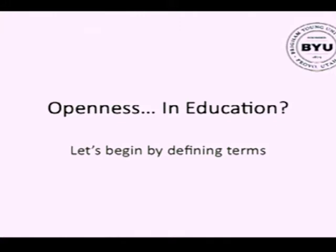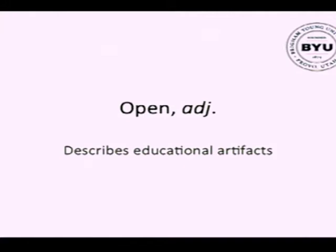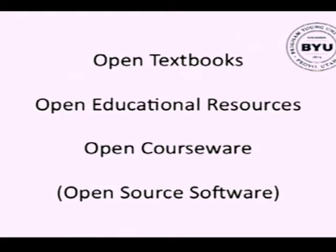When we talk about openness in education, first thing we have to do is define some terms. What does open mean, and what does education mean? For several years now, maybe a decade, when we've said open, we use open as an adjective to describe a variety of other resources, like open textbooks, open educational resources, open courseware, even open source software. Open is a word that describes some kinds of educational materials.